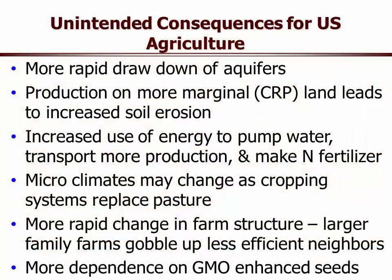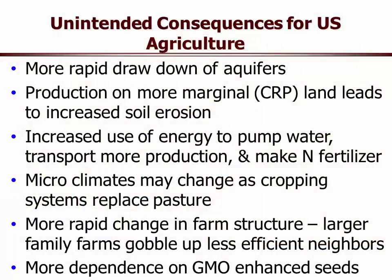More rapid change in farm structure is probably going to be the most socially unacceptable consequence. Our large, efficient family farms are going to gobble up their less efficient neighbors — it's been happening since 1900, it'll continue. A farmer with higher productivity and more output per acre is making more profit per acre than a neighbor with higher costs. Who's going to buy up that land? The more efficient farmer. This is not going to be popular, but it's going to happen. There'll be more dependence on GMO and hybrid seeds whether the world likes it or not.